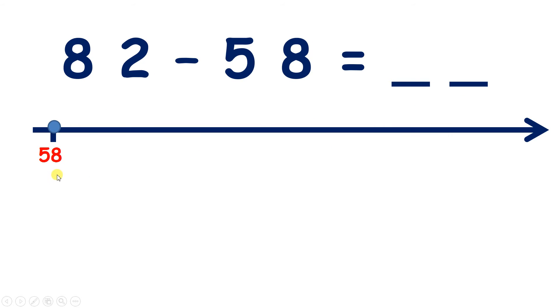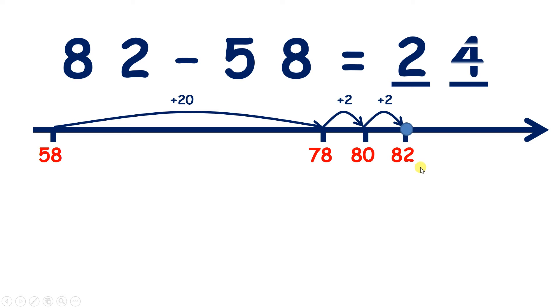Well, you could go all the way from 58 to 78 adding 20 or two tens. And now two more gets us to 80, another two gets us to 82. So that's four units all together because two plus two makes four.